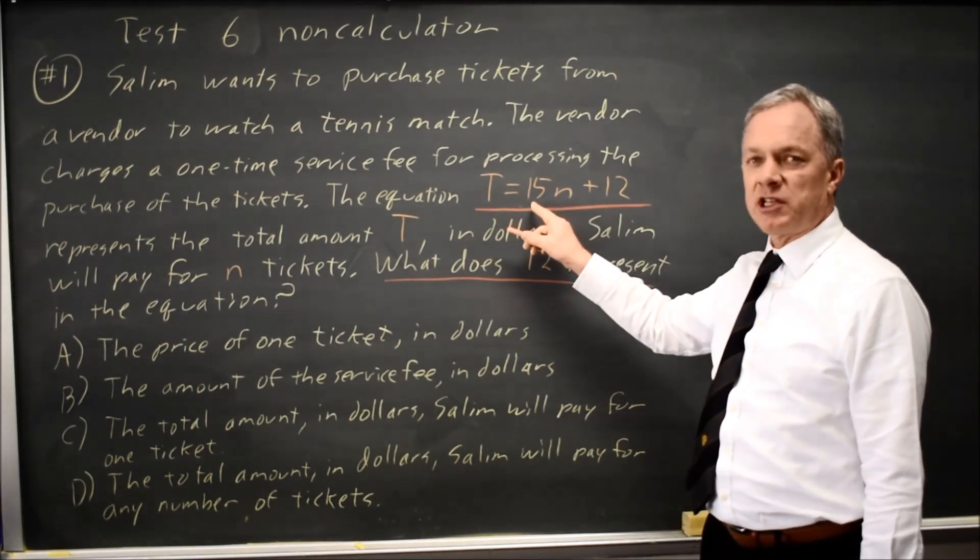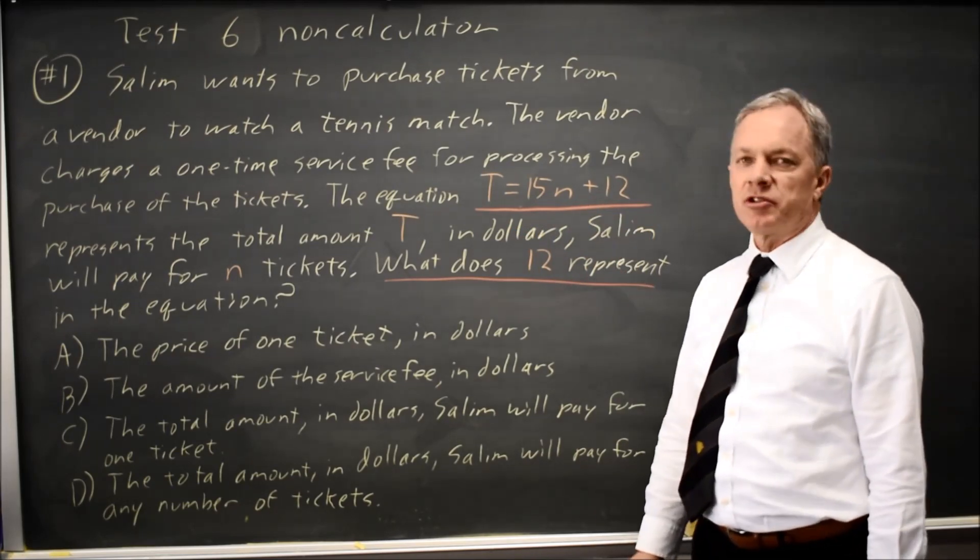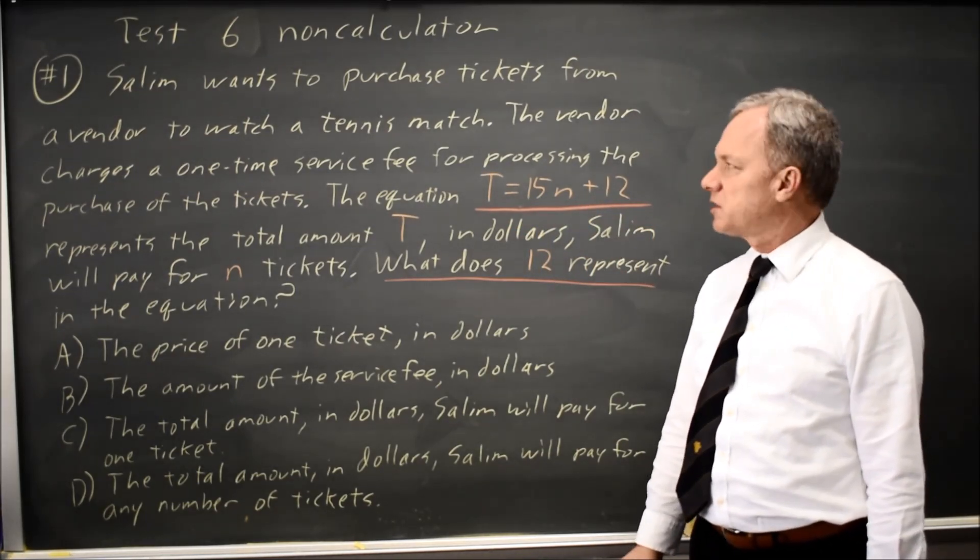In this case, the slope is 15, the intercept is 12, so they're asking for the meaning of the intercept in context.